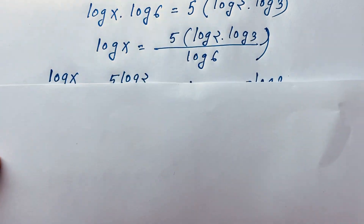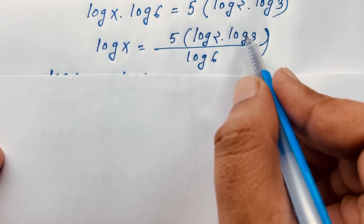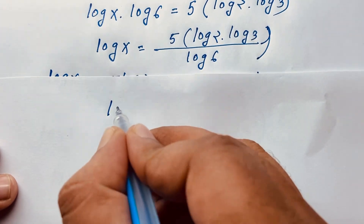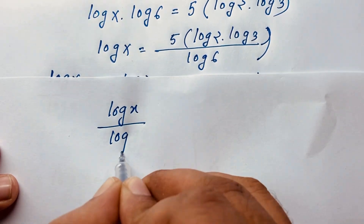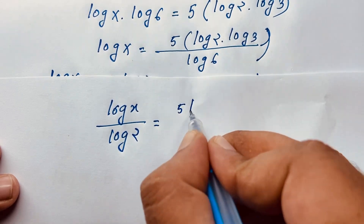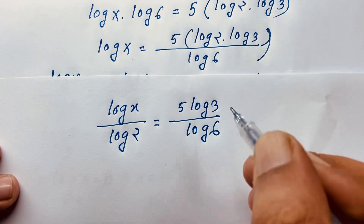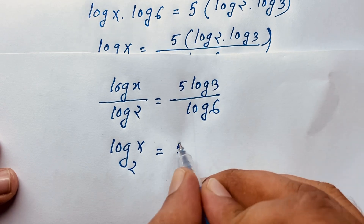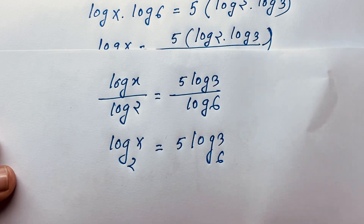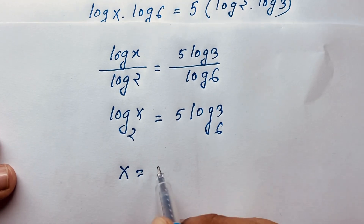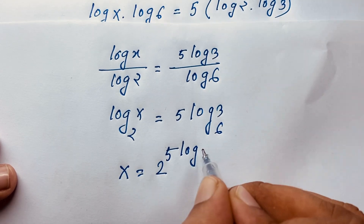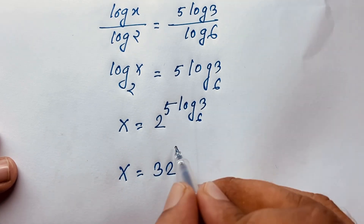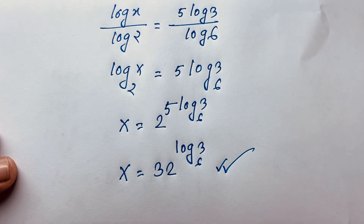We can also solve this question by a second method. Instead, we move log 2 to the other side, giving log x over log 2 equals 5 log 3 over log 6, which means log x base 2 equals 5 times log 3 base 6. Applying the same formula, x equals 2 to the power 5, which is 32, raised to the power log 3 base 6. This is the value of x by the second method.